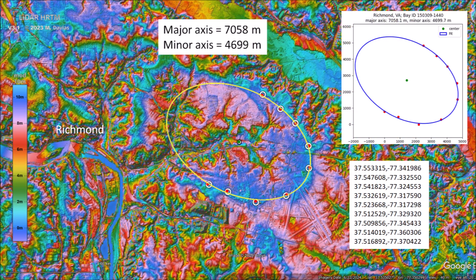I selected some points along the well-defined southeast rim of the basin and fitted the points with an ellipse by the least squares method. Only five points are needed to fit an ellipse, so the ellipse fitting procedure makes it possible to determine the dimensions of the complete basin. The resulting ellipse has a major axis of 7,058 meters and a minor axis of 4,699 meters.